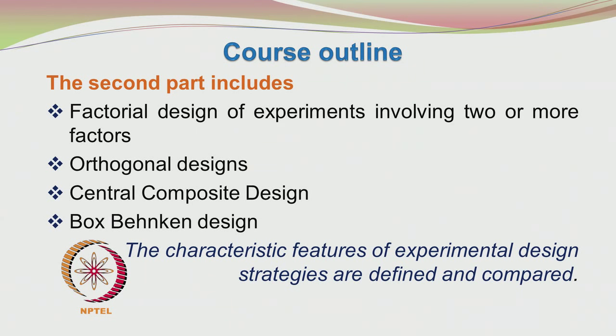The second part of the course deals with the design of experiments. The most popular among them is the factorial design of experiments, which may involve two or more factors. This is followed by an introduction to orthogonal designs, which are very convenient and make our analysis easy. Then we will look at higher-order designs like the central composite design and box-behnken design. We will discuss how to choose a particular experimental design, its important characteristics, and which is the most suitable design for your specific experimental work.